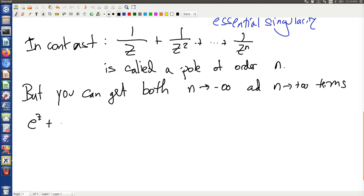In particular, e to the z plus e to the 1 over z is equal to n equals minus infinity, like this.